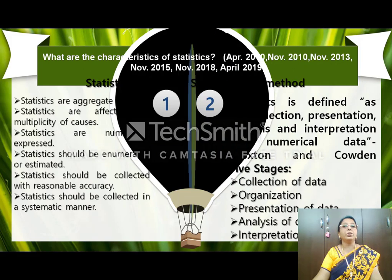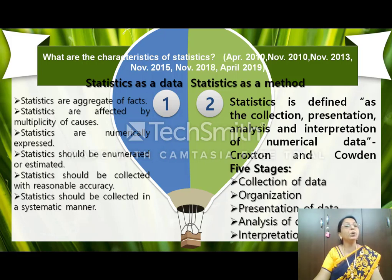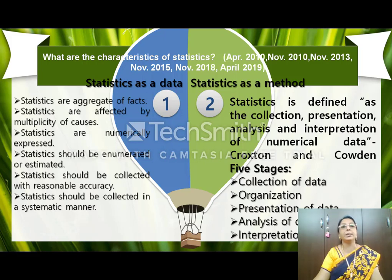When we go on to the characteristics of statistics, statistics can be characterized in two types: statistics as a data and statistics as a method. Statistics as a data means statistics is dealing with numbers. It is an aggregate of facts, affected by multiplicity of causes. It is numerically expressed, enumerated or estimated, and it should be collected with reasonable accuracy and in a systematic manner.